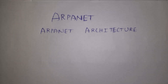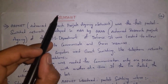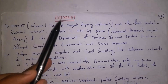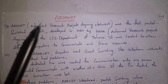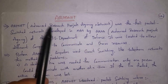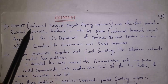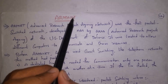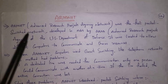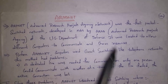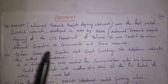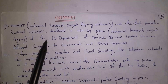First I will explain what is ARPANET. ARPANET stands for Advanced Research Projects Agency Network. Advanced Research Projects Agency developed this network, that is why they gave the name ARPANET, where ARPA stands for Advanced Research Projects Agency and NET stands for Network. ARPANET was the first packet switched network, developed in 1969 by ARPA, which is the Advanced Research Projects Agency, and this agency belongs to the US Department of Defense.